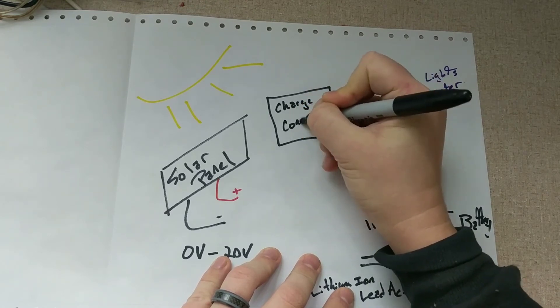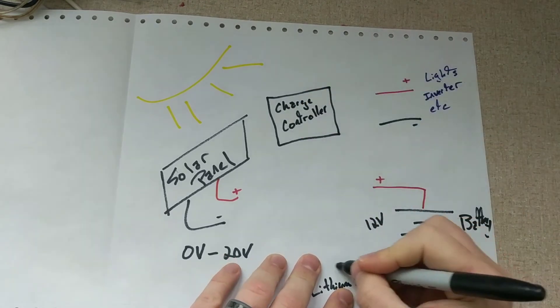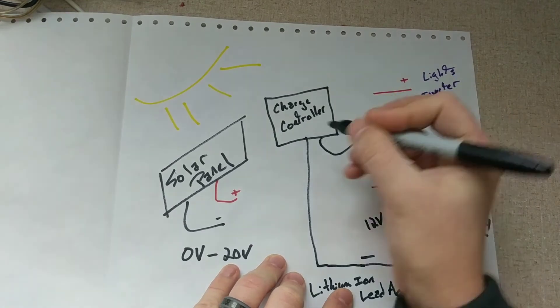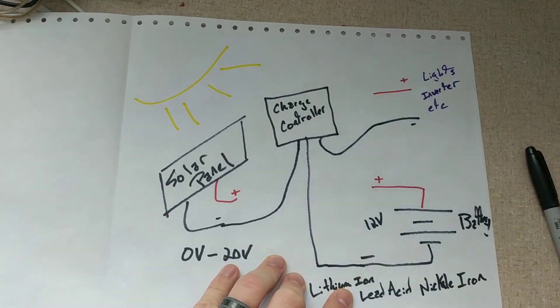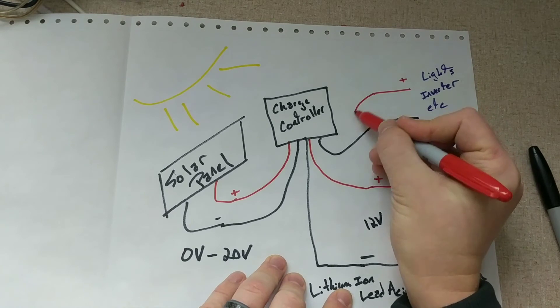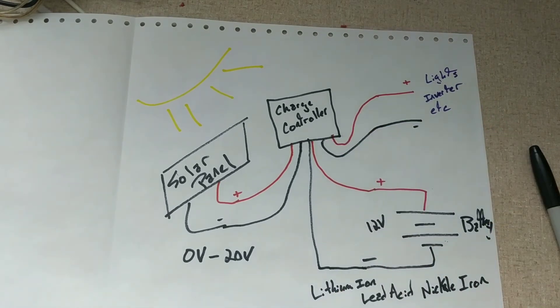So we need to tie all these systems together and make sure that we have the clean output and a steady charging voltage for our batteries. Thus the charge controller. And that's the theory for your basic off-grid solar system.